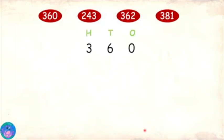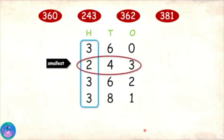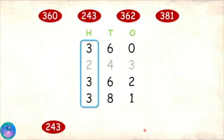Sure. So the numbers are being written one under the other and we will start comparing the hundreds digits. And 2 is the smallest. So the number 243 is the smallest. I'll write that down. Now we are left with three numbers.